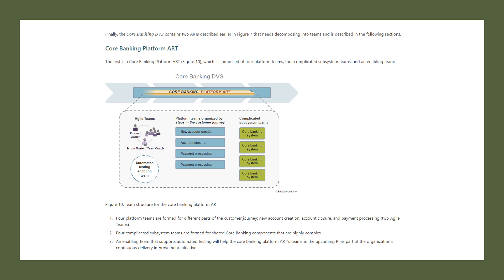So within the platform ART, using team topologies, you are going to have four platform teams and four complicated subsystem teams. Finally, there is an enabling team that supports automated testing, which will help the core banking platform ART's teams in upcoming PIs as part of the organization's continuous delivery improvement initiatives. So for supporting these platform teams and complicated subsystem teams, you have one enabling team. This is how we can organize the core banking platform ART within your solution train.